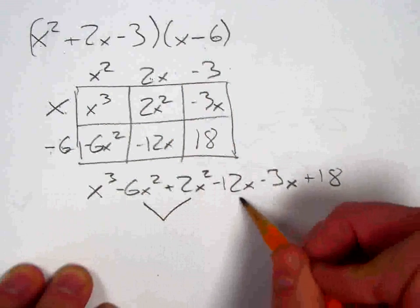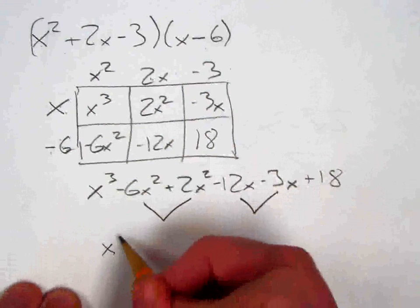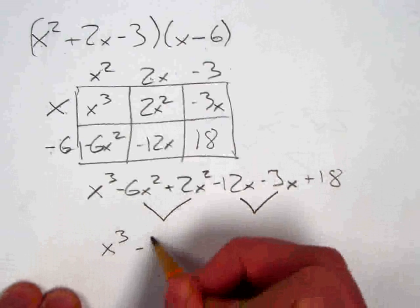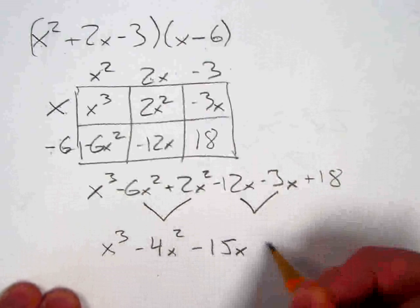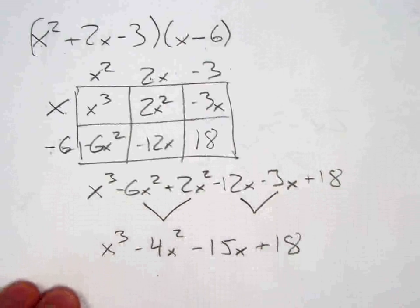Looks like I've got a few sets of like terms here, my x squared terms and my x terms, so I'm just going to combine those. This is going to make negative 4x squared. This is going to make negative 15x and 18.